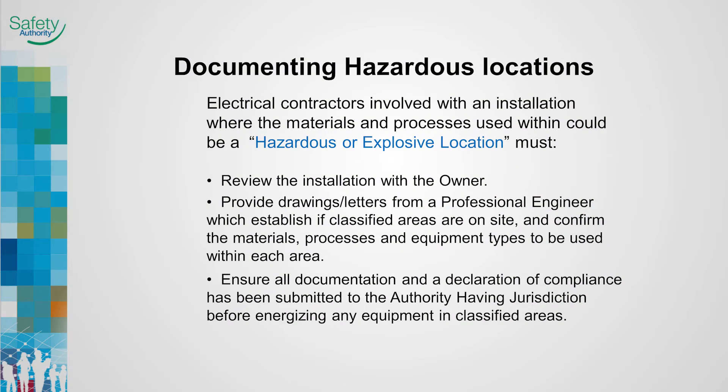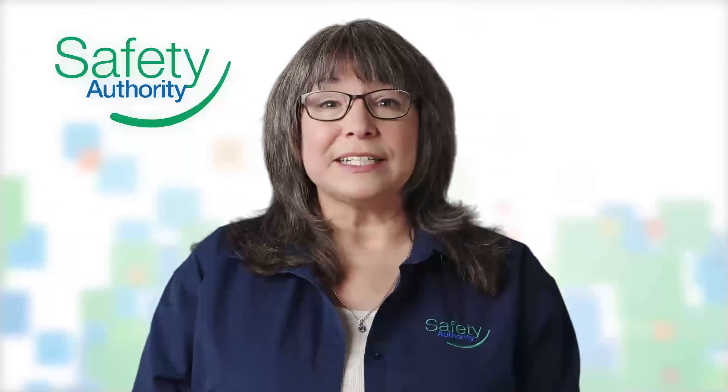Electrical contractors involved with an installation where the materials and processes used could create a hazardous or explosive location must review the installation with the owner, provide drawings and letters from the engineer which establish each classified area, and confirm the materials, processes, and equipment types to be used within. Ensure all documentation is complete and submit a declaration of compliance before energizing any equipment in classified areas. And remember, all dust is considered flammable unless it can be proven otherwise.